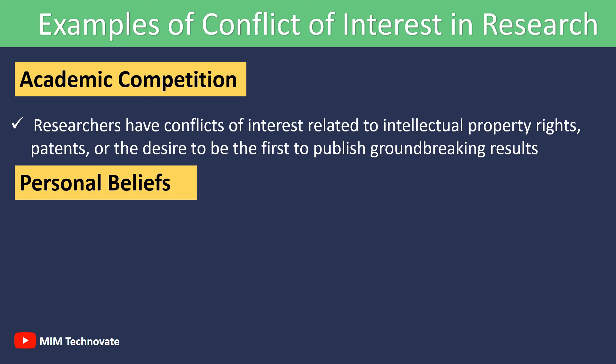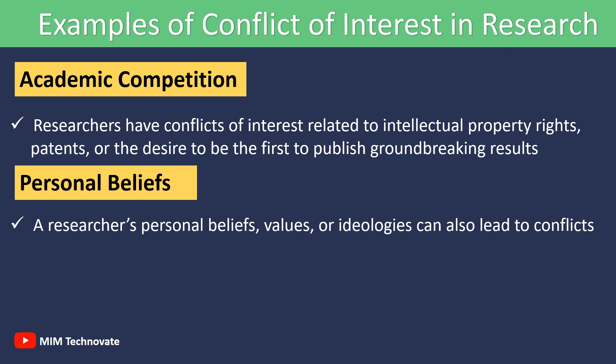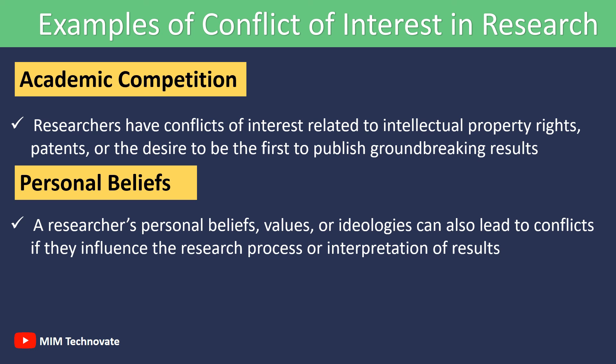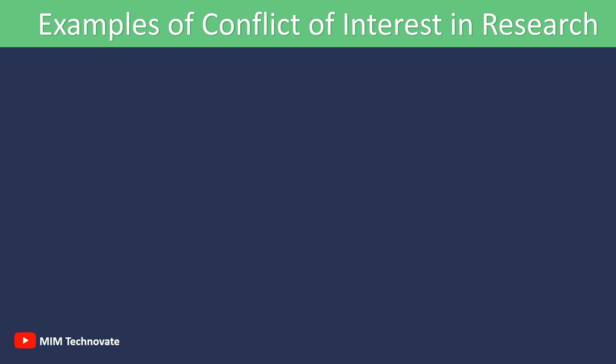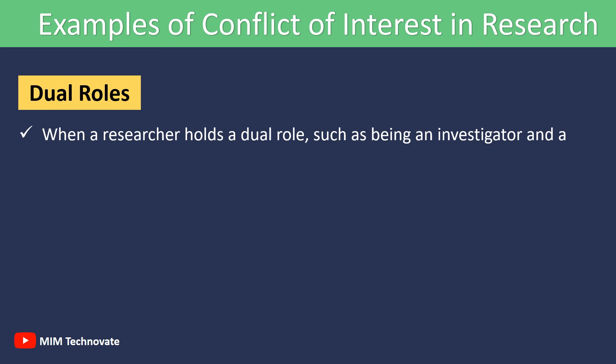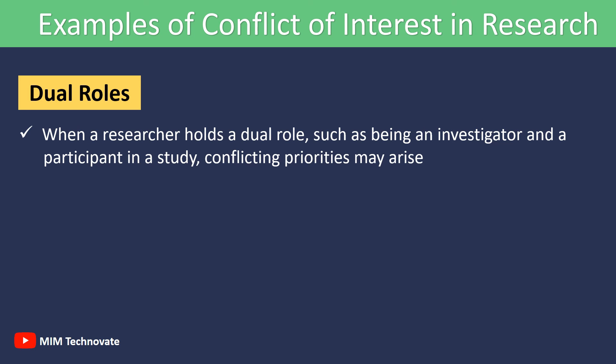Personal Beliefs: A researcher's personal beliefs, values, or ideologies can also lead to conflicts if they influence the research process or interpretations of the results. For example, a climate change skeptic conducting a study on global warming may face a conflict. Dual Roles: When a researcher holds a dual role, such as being an investigator and a participant in a study, conflicting priorities may arise. This can affect data collection and analysis.